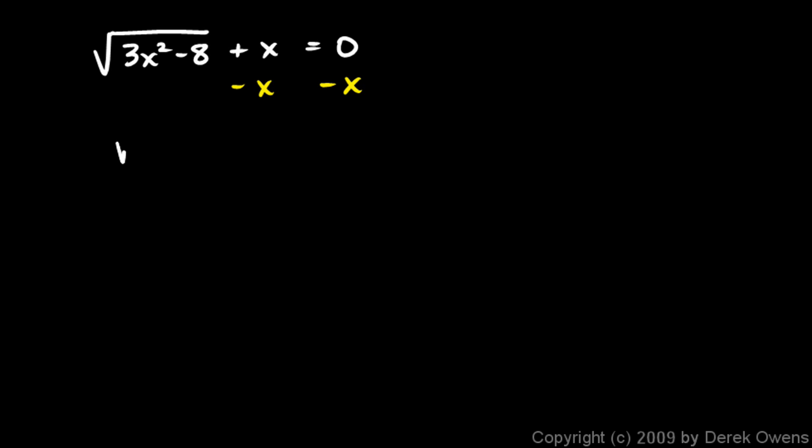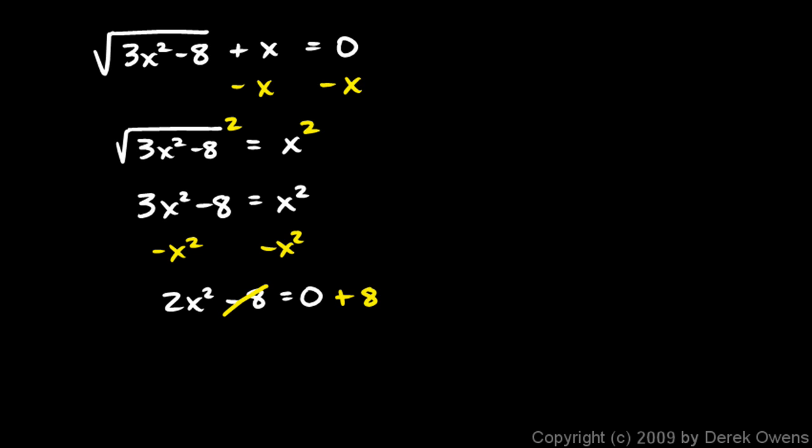That gives me the square root of 3x squared minus 8 equals negative x. Now I can get rid of the radical by squaring both sides. The radical goes away on the left, and I have 3x squared minus 8 equals x squared. Then if I subtract x squared from each side, I get 2x squared minus 8 equals 0. Let's add 8 to each side, and I get 2x squared equals 8. Divide each side by 2, and I get x squared equals 4. From that, I get x is equal to plus or minus 2.